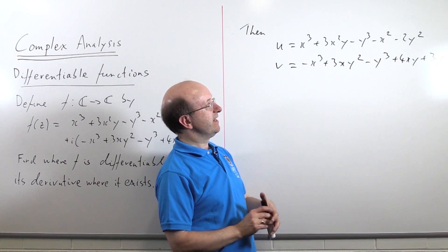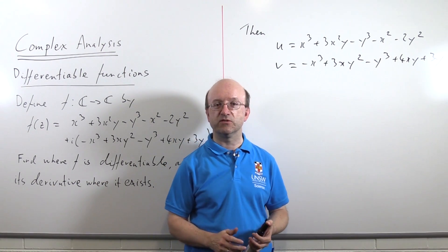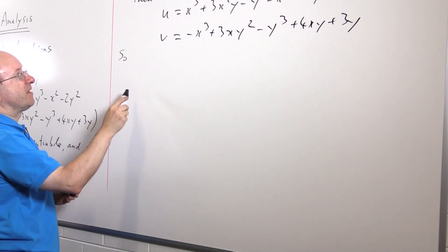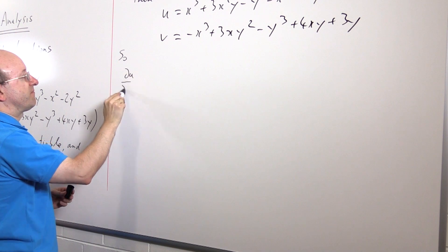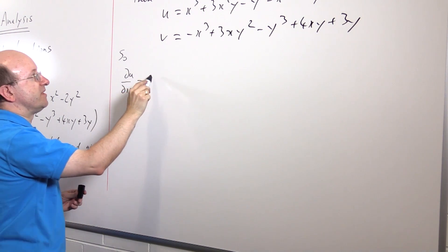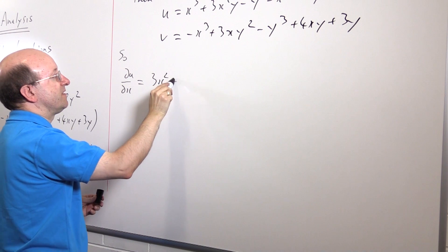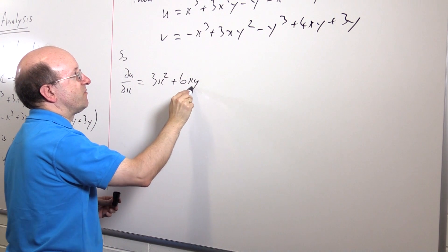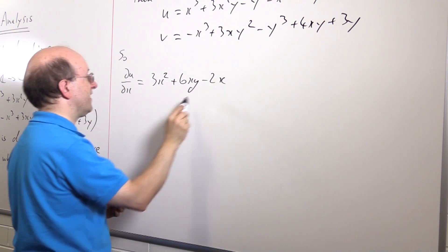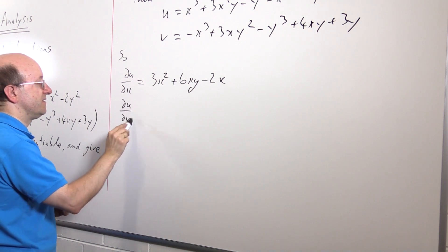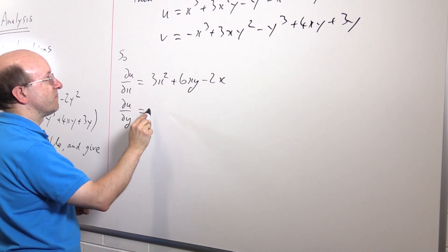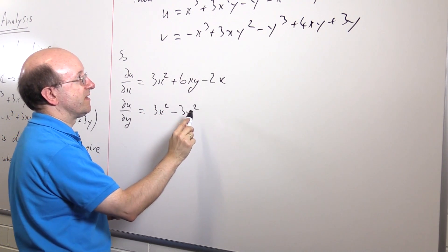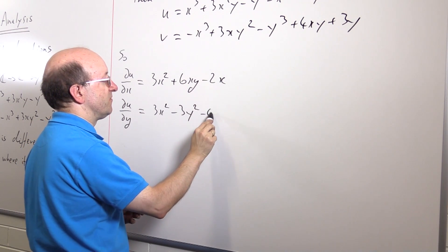So, having got the real and imaginary parts, we now want to check the Cauchy-Riemann equations, find out where they're satisfied. So, we'll begin with du dx, which is, in our case, 3x squared plus 6xy minus 2x. And underneath it we'll put du dy, which is 3x squared minus 3y squared minus 4y.